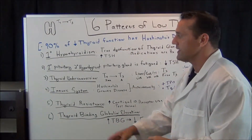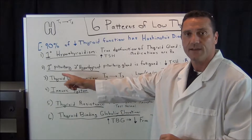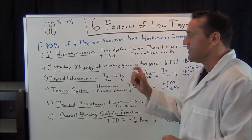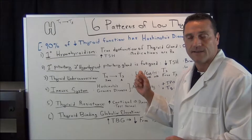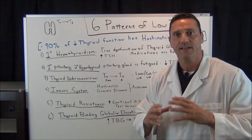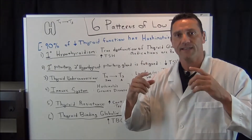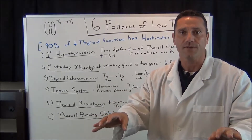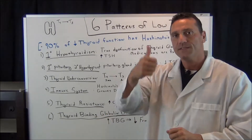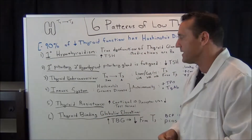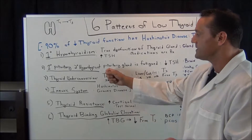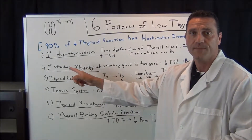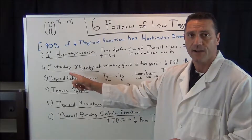The second pattern is primary pituitary, but secondary hypothyroid. This is where the pituitary gland is fatigued. The pituitary gland is a master gland that sends a signal down to the thyroid gland to produce its hormones — it's a little bit north of the thyroid gland itself. This is called primary pituitary, secondary hypothyroid.